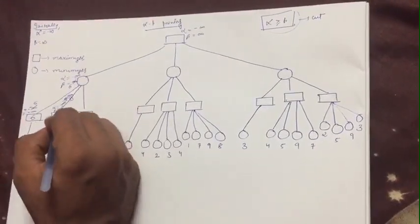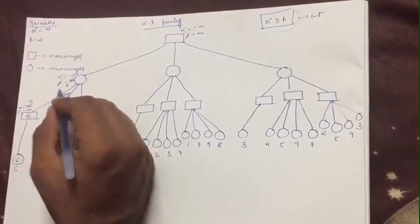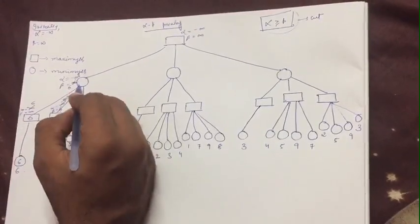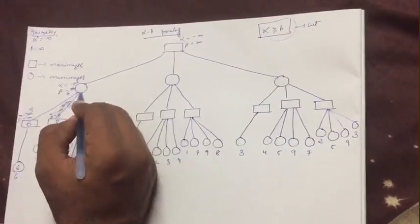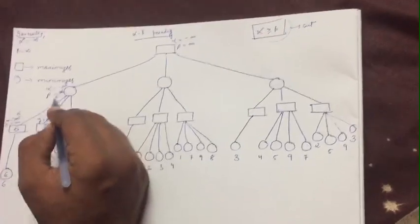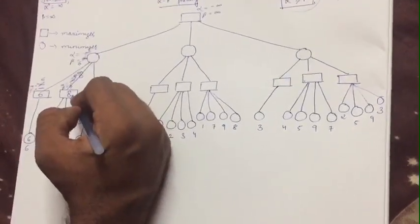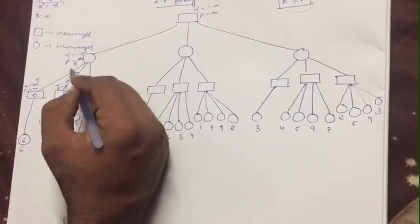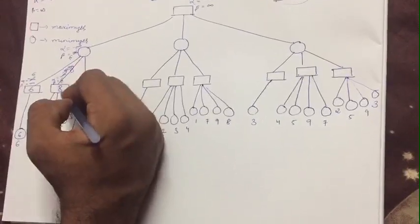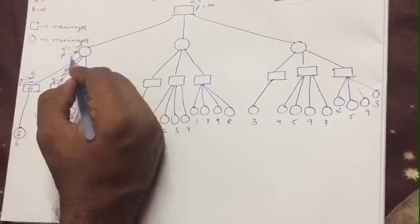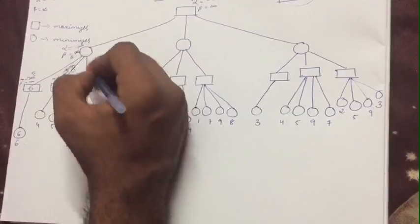The maximum value from this subtree is 8. Traversing back to the minimizer node, we compare beta (6) with 8. The minimum is 6, so we do not change beta and keep it as 6.